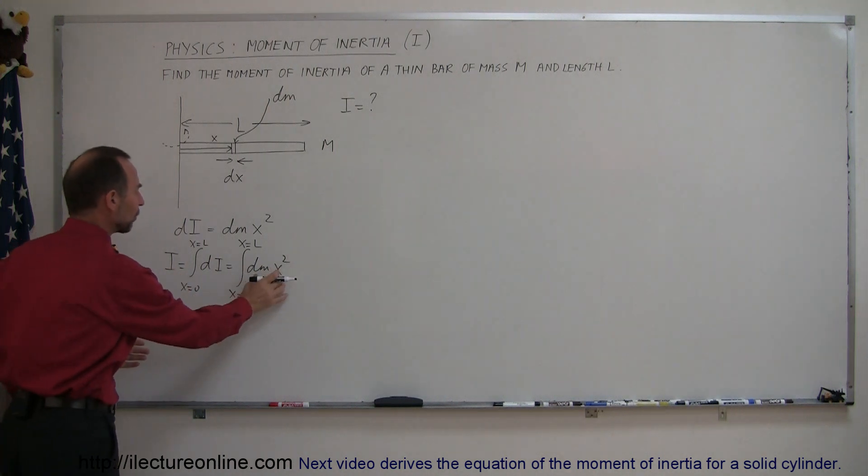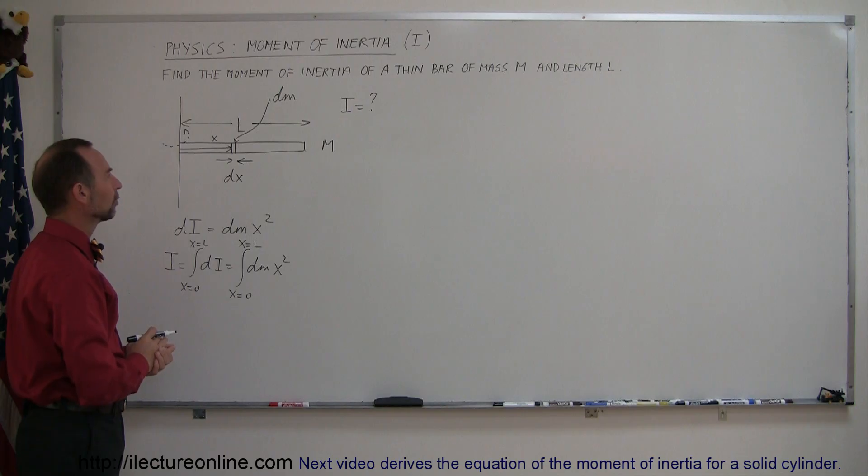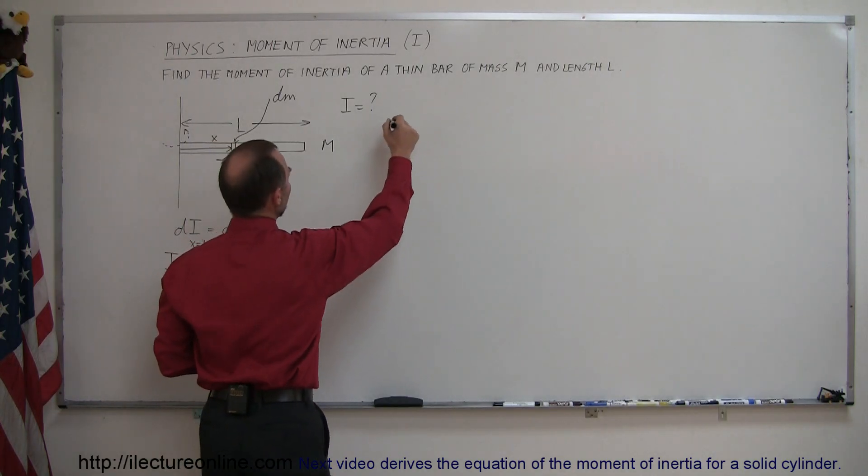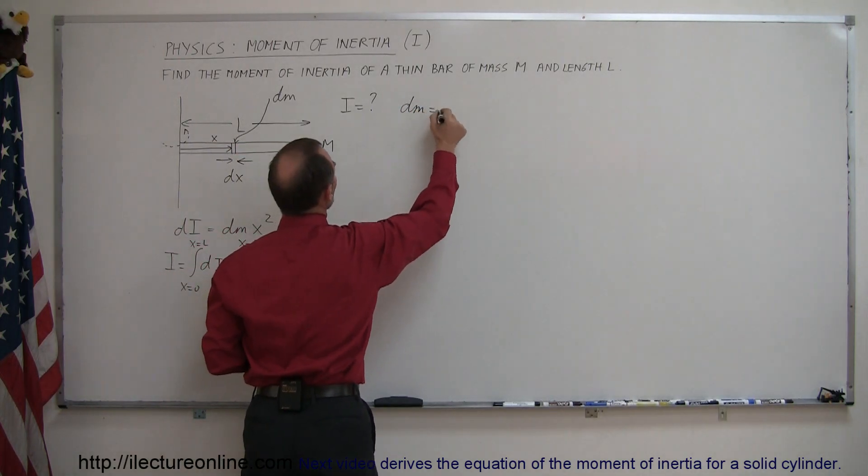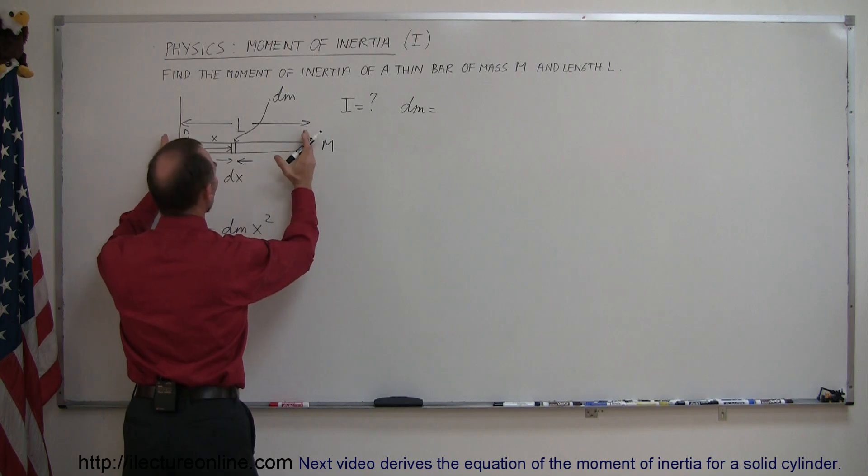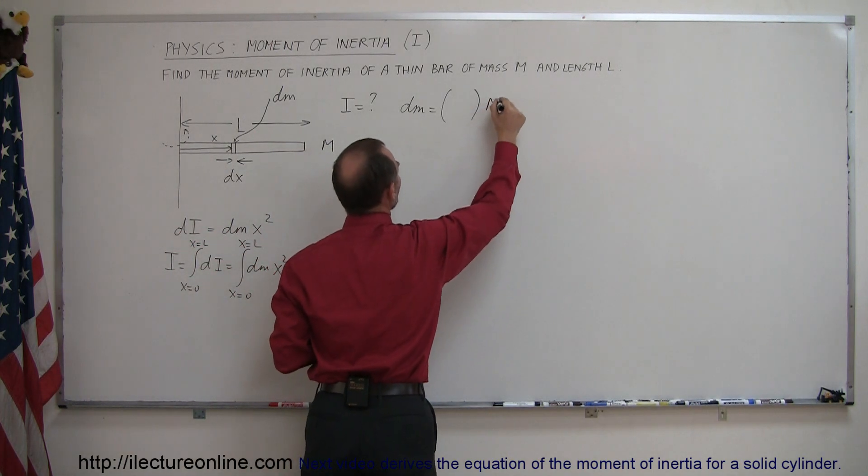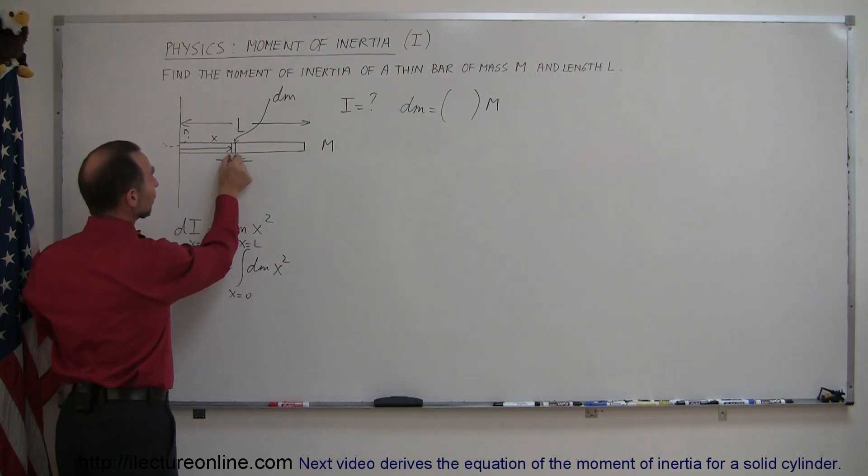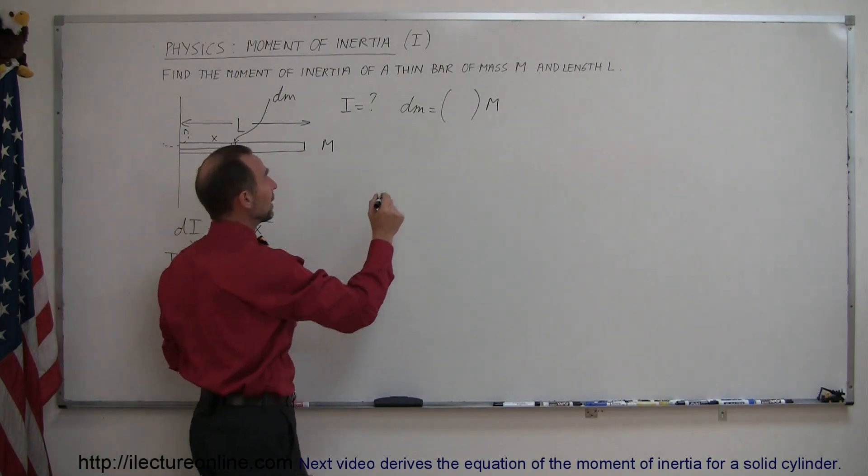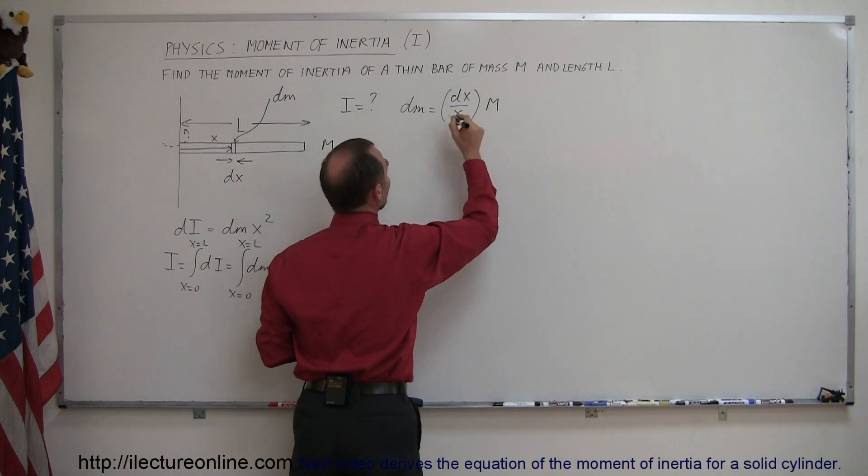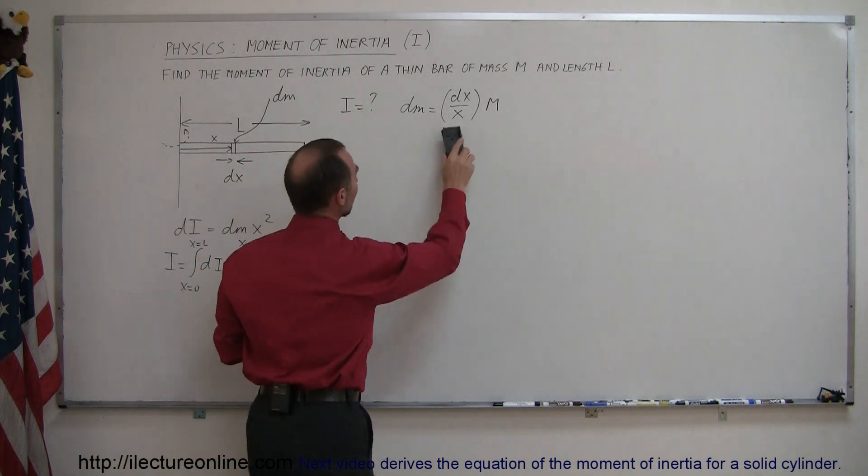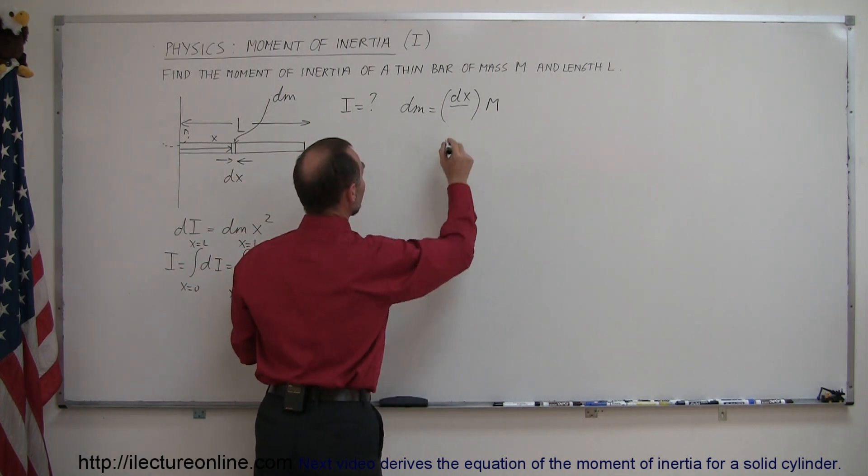I have to do something here to make these two variables equal to each other. So, how do I relate dm to dx? Well, the mass of a little segment right here, the dm, is equal to a fraction of the whole mass. It's equal to some fraction times the whole mass, and that fraction is going to be the ratio of the length of dx compared to the whole length. So, this is really, can be written as dx over l, the total length right here, dx over l.